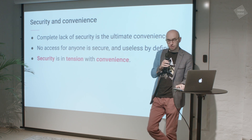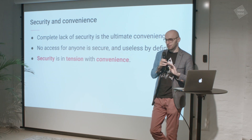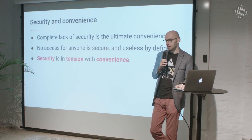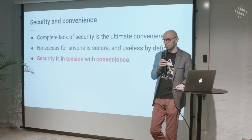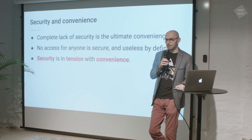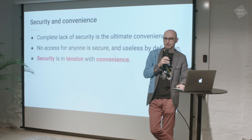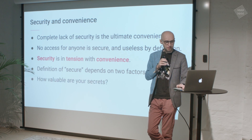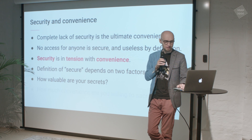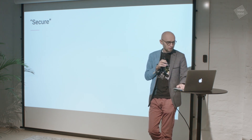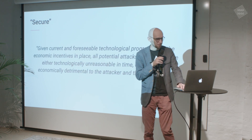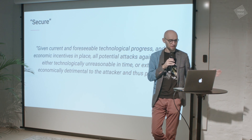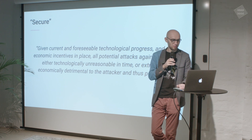QR codes are actually reasonably secure for sending transactions to an online computer — there isn't much that can go wrong. Something like a USB cable is 'universal,' but if you Google 'bad USB,' there are a lot of things you can do with a USB cable that maybe aren't what you want. QR codes are actually kind of primitive, which is good, though maybe not super convenient. The definition of what is secure depends on how valuable your secrets are and how much convenience you're willing to sacrifice. When we say secure, we roughly mean: given current and foreseeable technological progress and economic incentives, all potential attacks are either technologically unreasonable in time or so economically detrimental that attacking is pointless.